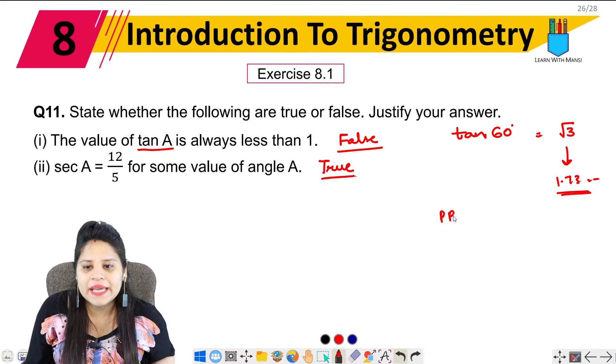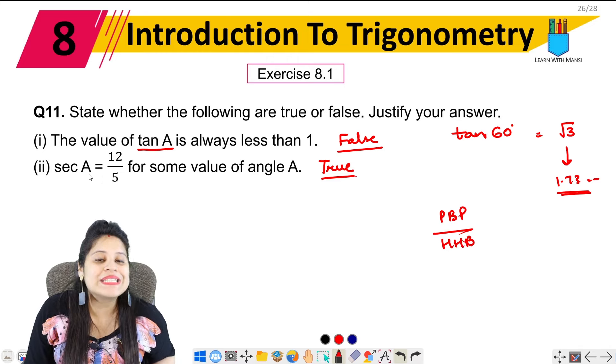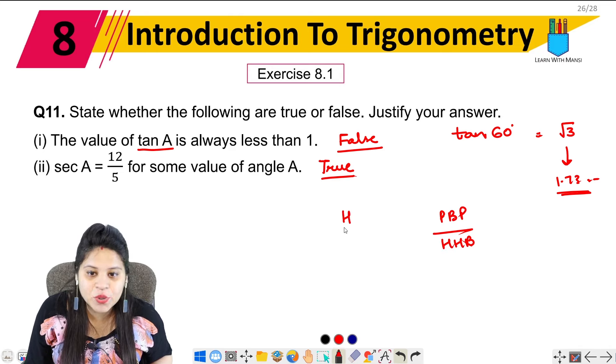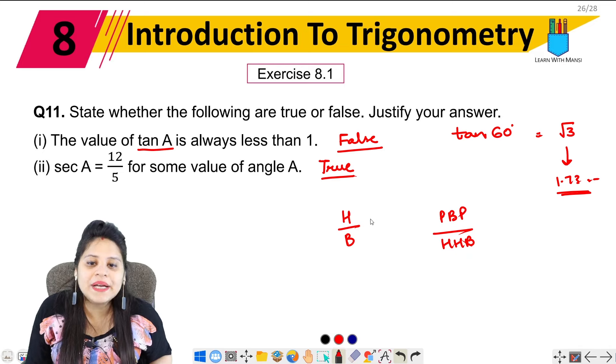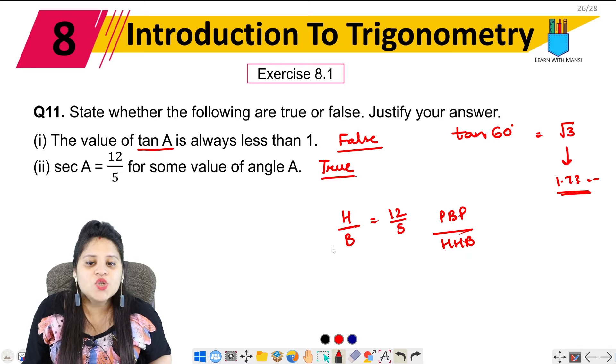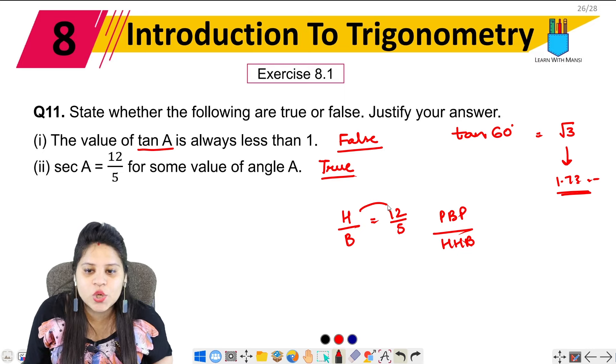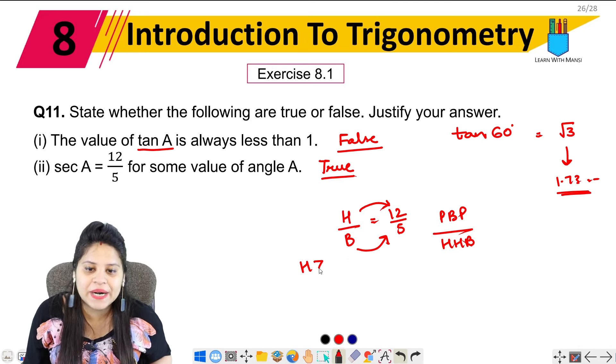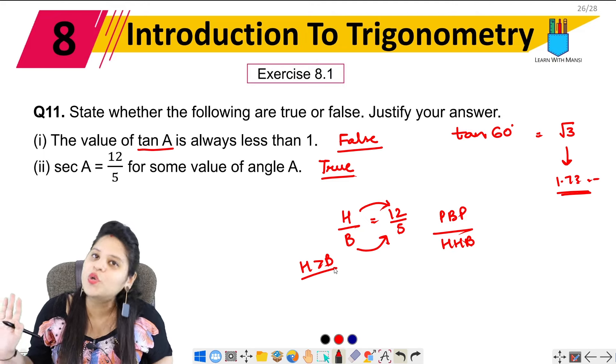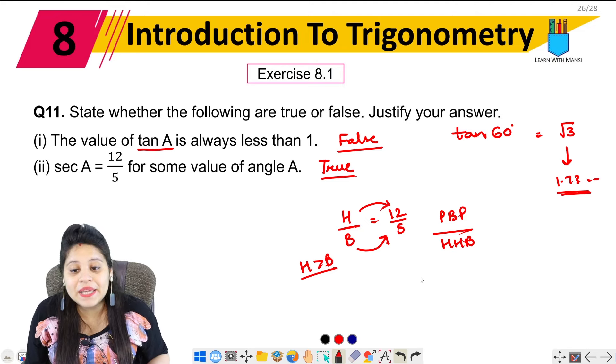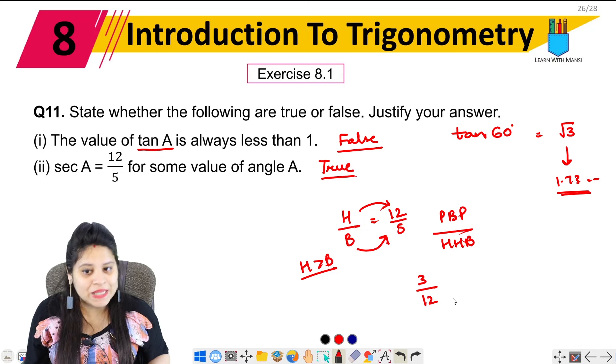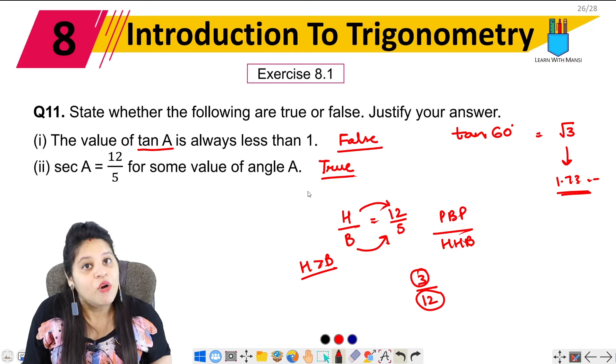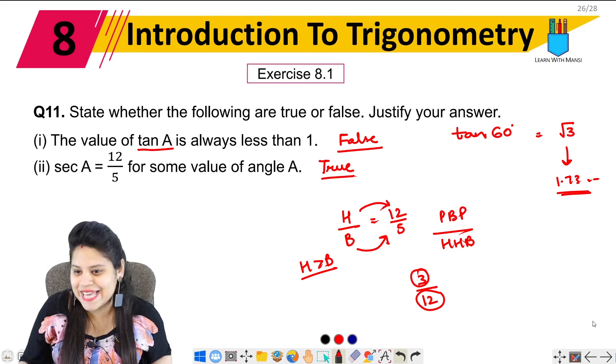Look, it is simple. We have done it in every question. So sec A, which is hypotenuse upon base. So if we are equal here 12 upon 5, so this can be a possibility because hypotenuse will become 12 and base will become 5. So there is no problem here. Hypotenuse is bigger than base, so we can say this. Yes, if we can say this. If it is 3 upon 12, it means something like this which is small and small, then hypotenuse will become small and low. So this statement is false, which we will see in the last part.